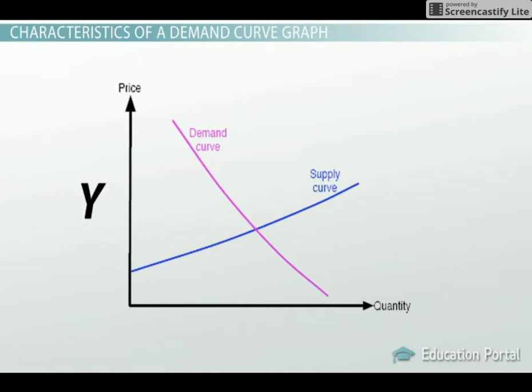The y-axis, or vertical line of the graph, is the price, and the x-axis, or horizontal line, is the quantity.